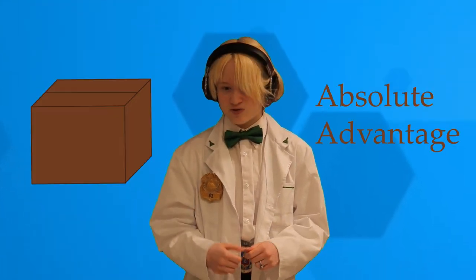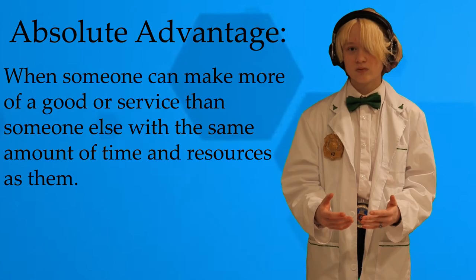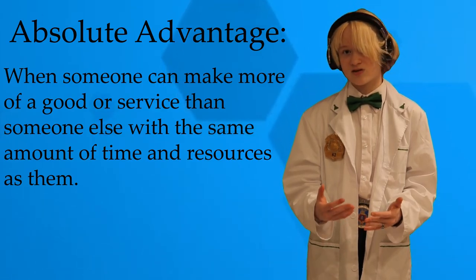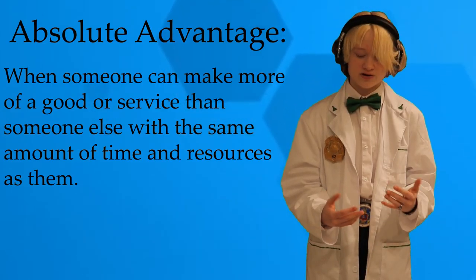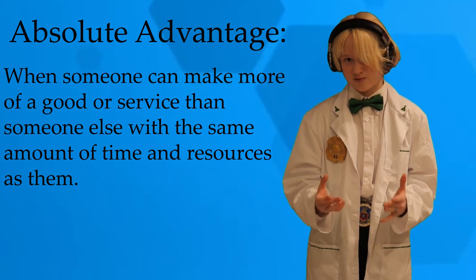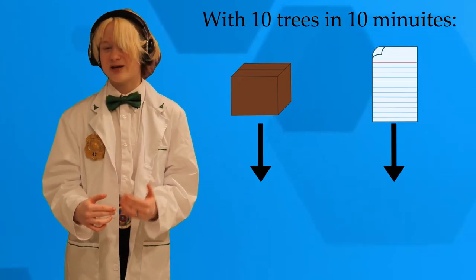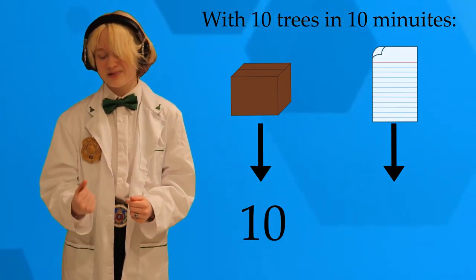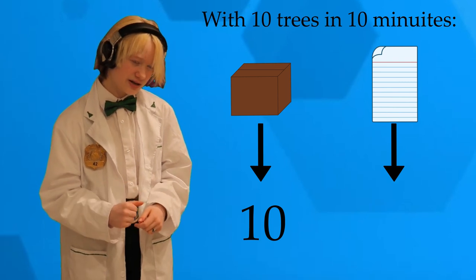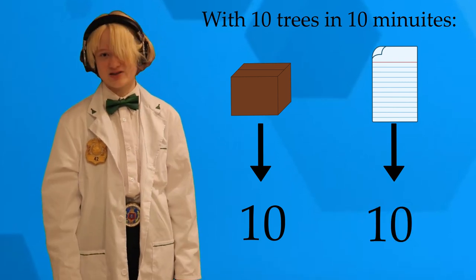Well, the Cardboard Kingdom has what's called an absolute advantage. Absolute advantage is when someone can make more of a good or service than someone else in the same amount of time and resources. The Cardboard Kingdom can make 10 sheets of cardboard in 10 minutes with 10 trees, but the Paper Kingdom can only make one sheet of cardboard in 10 minutes with 10 trees.